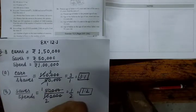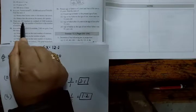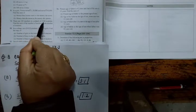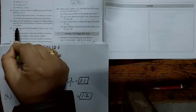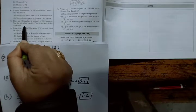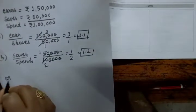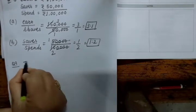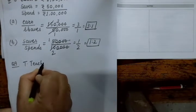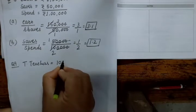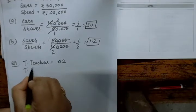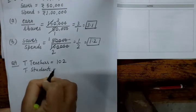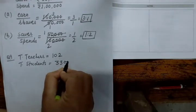Next, question number 9: there are 102 teachers in a school of 3,300 students. Find the ratio of the number of teachers to the number of students. Total teachers equal 102, and total students equal 3,300.